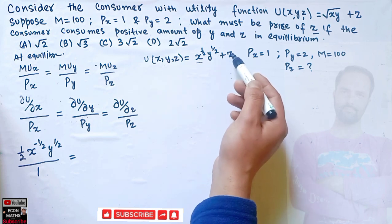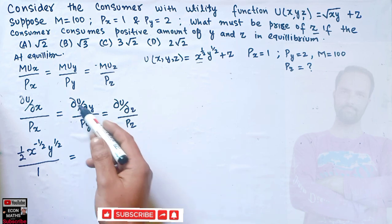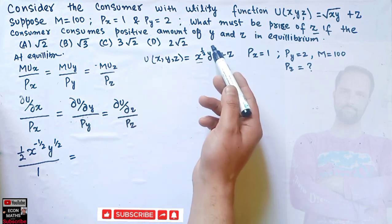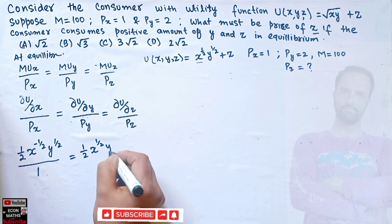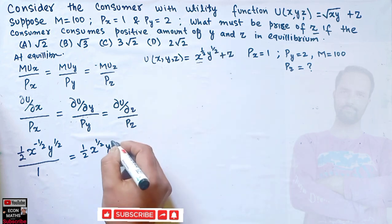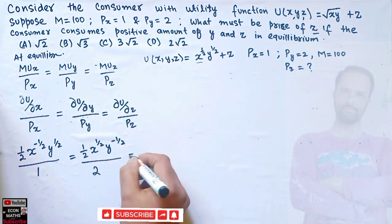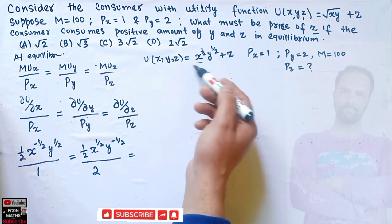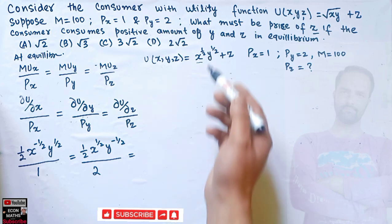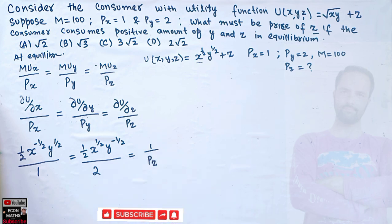The derivative of z is 0 when differentiating with respect to x. Partially differentiating with respect to y: MUy = (1/2) x^(1/2) · y^(-1/2), divided by price of y which is 2. Partially differentiating with respect to z: since no z is involved in the first term, the derivative of z is 1, so this equals 1 over Pz.